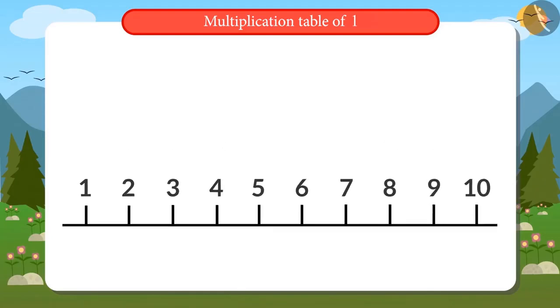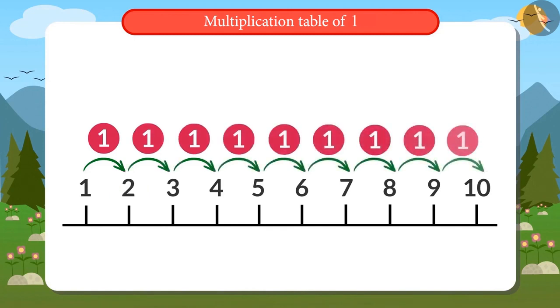If we add one to any number on the number line, we get its succeeding number. This is the number line.